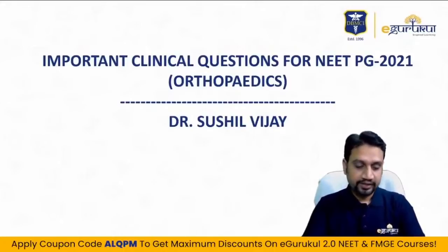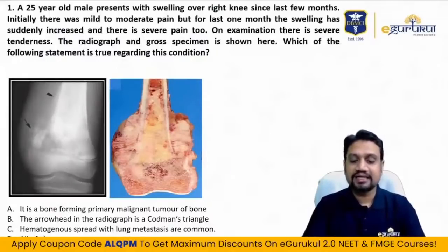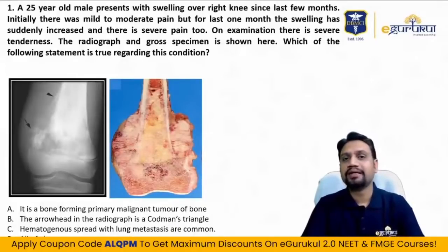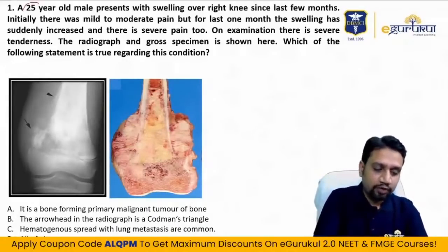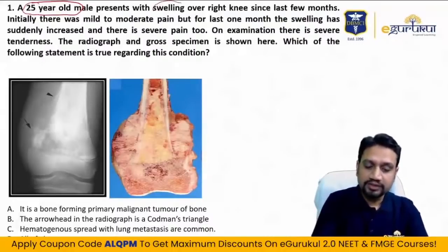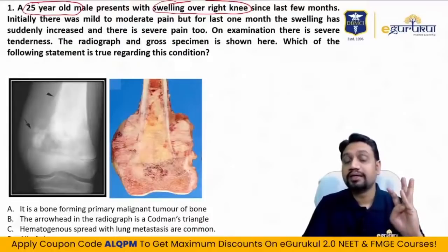The first question: a 25-year-old male presents with swelling over the right knee for the last few months. First point — swelling differentials: 25-year-old male with swelling around the knee — it can be trauma, a tumor, or some sort of infection.